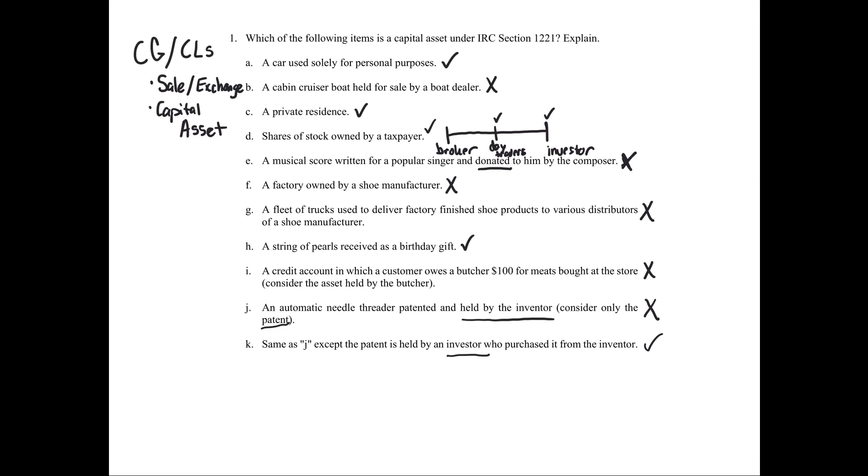So again, the reason why we have to go through and determine what's a capital asset and what's not is under the general rules of section 1221, 1222, to have a capital gain, capital loss, you need to have a sale or exchange of a capital asset. So we're going to continue on to some other problems that focus on the sale or exchange and the capital asset aspects even more.